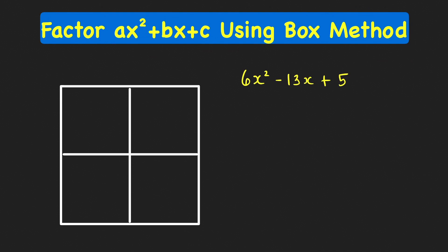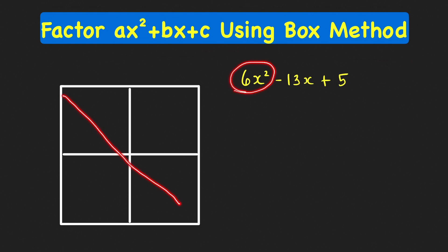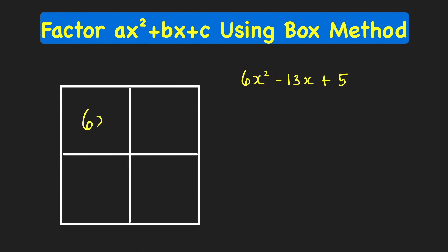Suppose we want to factor this trinomial, 6x squared minus 13x plus 5. First, we fill in this diagonal of this box using the ax squared term and then the constant term 5. So we put the 6x squared here and then the constant term here.